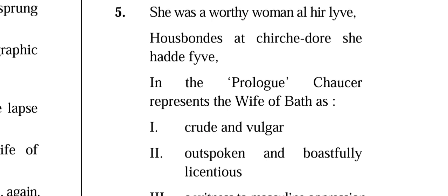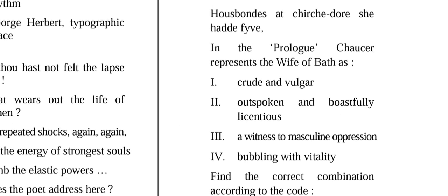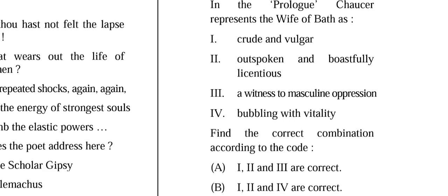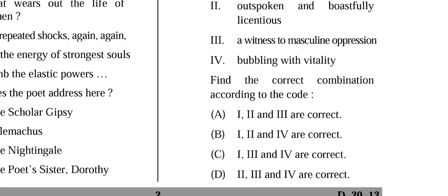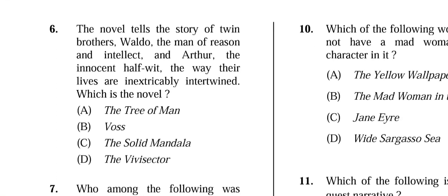Question 5: 'She was a worthy woman all her live; husbands at church door she had five.' In the Prologue, Chaucer represents the Wife of Bath as what? Options: (1) crude and vulgar, (2) outspoken and boastfully licentious, (3) a witness to masculine domination, (4) bubbling with vitality. The correct answer is (B) — options 1, 2, and 4 are correct.